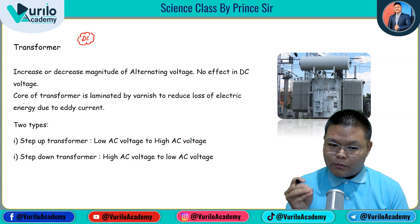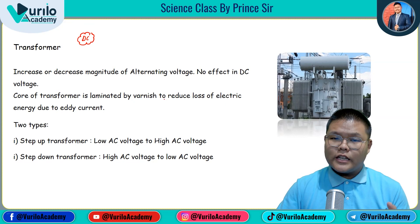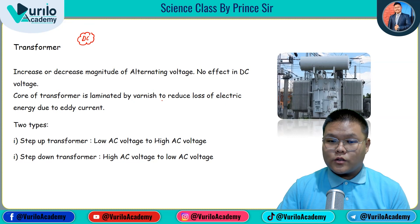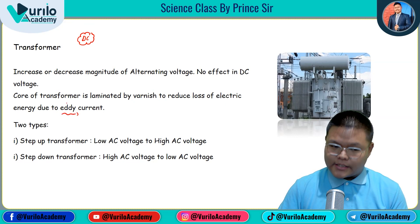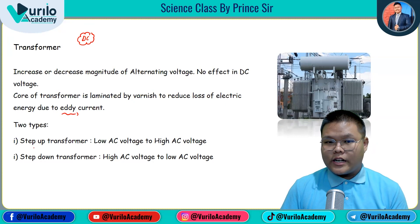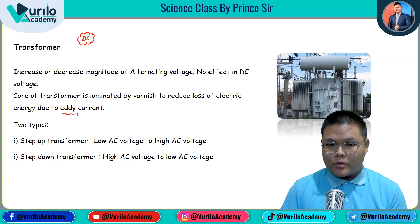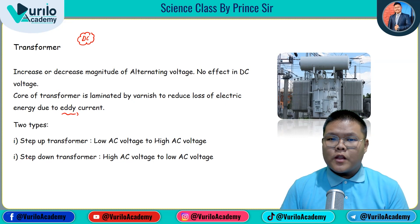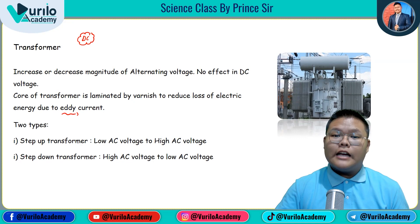The core of a transformer is laminated and insulated with varnish. This lamination reduces the loss of electrical energy. A step-up transformer takes a low alternating voltage and converts it to a high alternating voltage, while a step-down transformer does the vice versa — converting high voltage to low voltage.